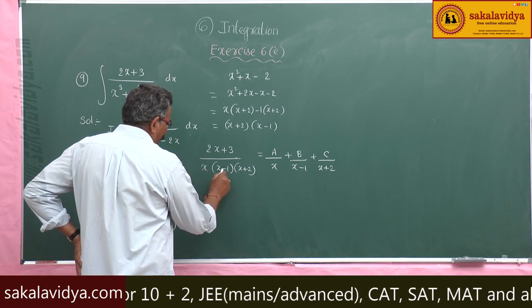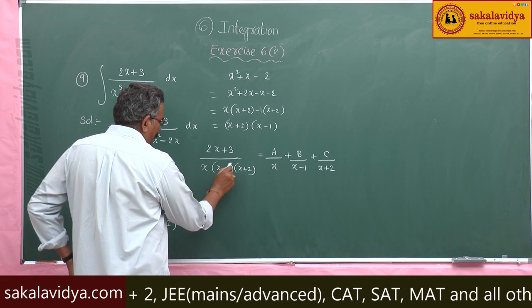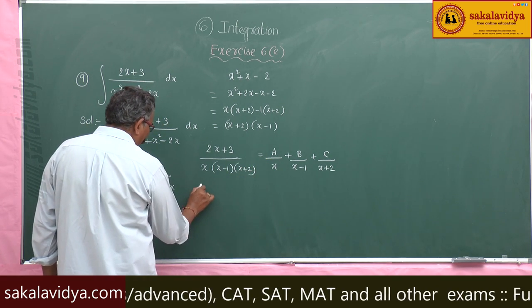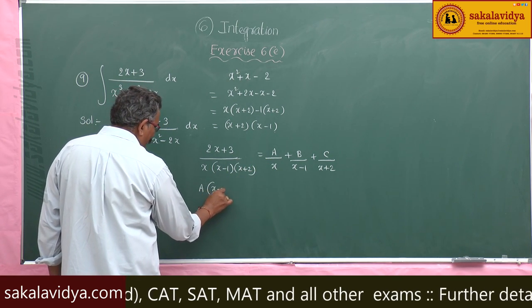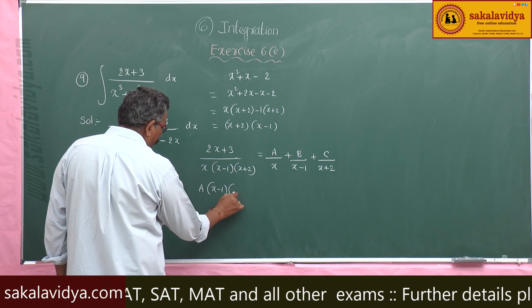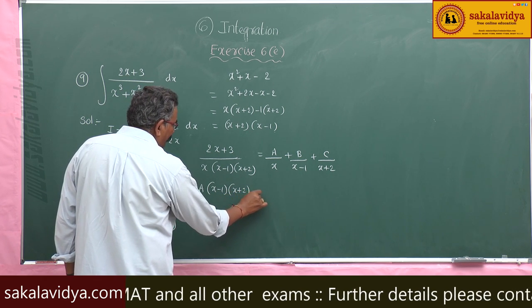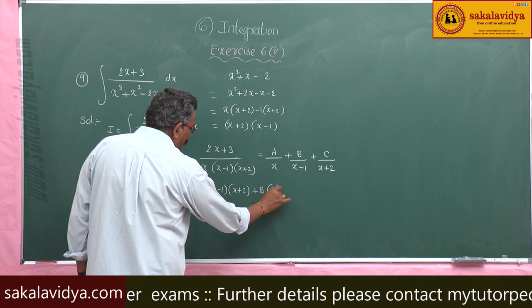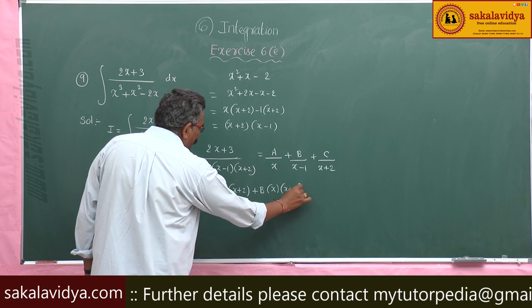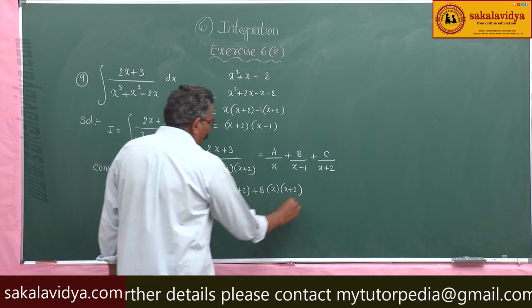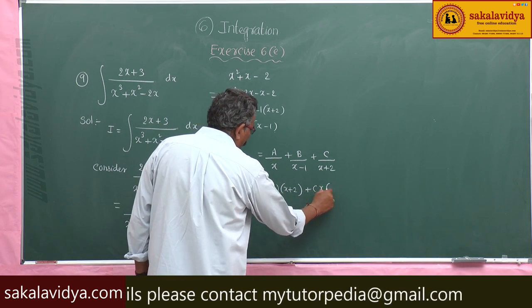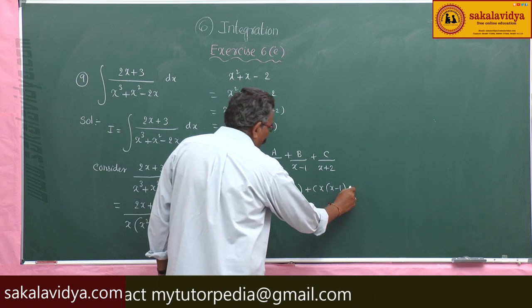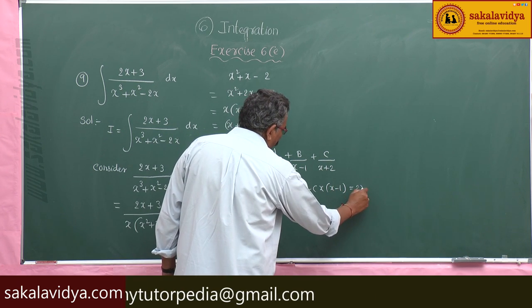Multiply both sides with x(x - 1)(x + 2). We get: A(x - 1)(x + 2) + B·x(x + 2) + C·x(x - 1) = 2x + 3.